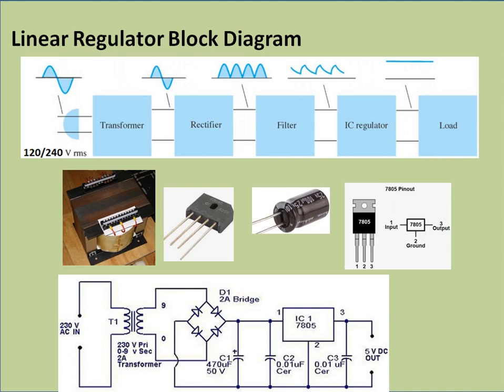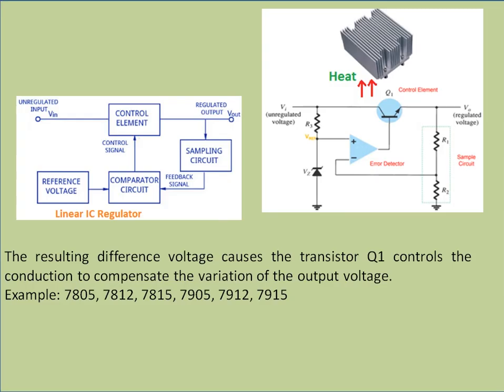In a typical linear power supply circuit, the AC input is converted to the required voltage, then rectified by a bridge rectifier, filtered, and fed to a 7805 regulator which gives the required 5V DC output. The excess voltage is dropped across transistor Q1, and this dissipation is converted to heat which is dissipated by a heat sink, further increasing the weight of the linear power supply.